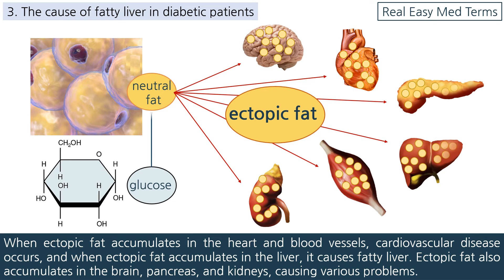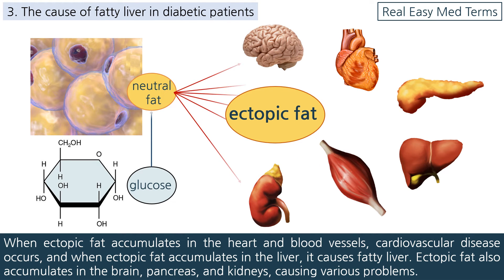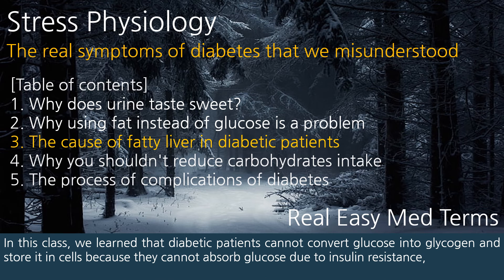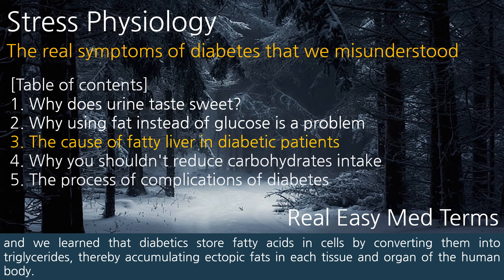Ectopic fat also accumulates in the brain, pancreas, and kidneys, causing various problems. In this class, we learned that diabetic patients cannot convert glucose into glycogen and store it in cells because they cannot absorb glucose due to insulin resistance. We also learned that diabetics store fatty acids in cells by converting them into triglycerides, thereby accumulating ectopic fats in each tissue and organ of the human body.